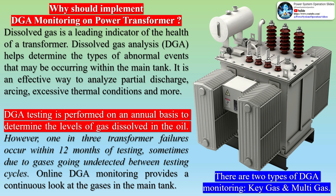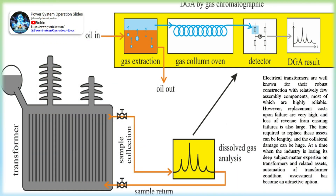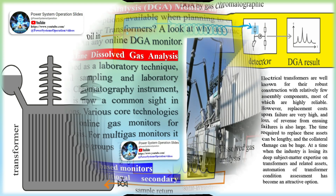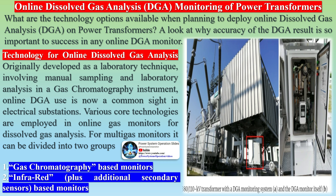What are the technology options available when planning to deploy online Dissolved Gas Analysis (DGA) on power transformers? Originally developed as a laboratory technique involving manual sampling and laboratory analysis in a gas chromatography instrument, online DGA use is now a common sight in electrical substations. Various core technologies are employed in online gas monitors for dissolved gas analysis.